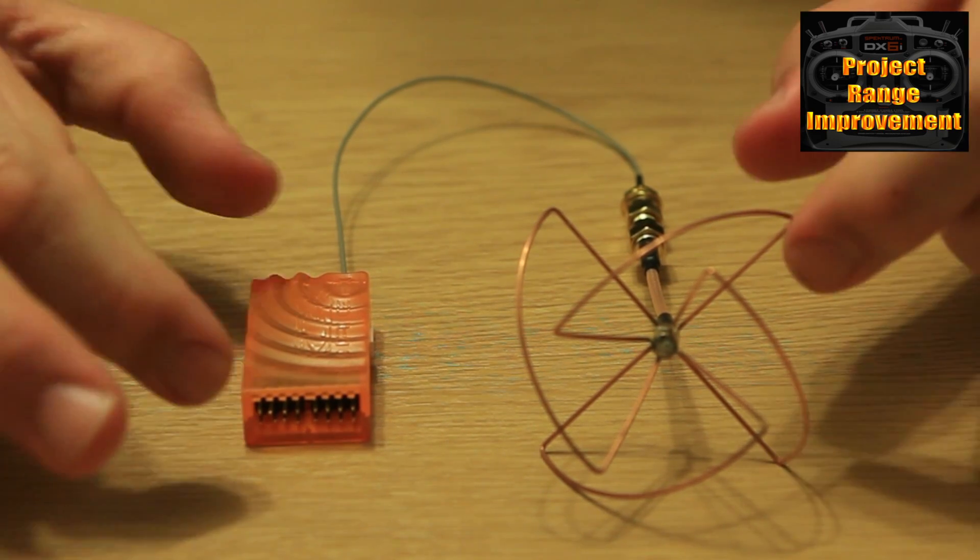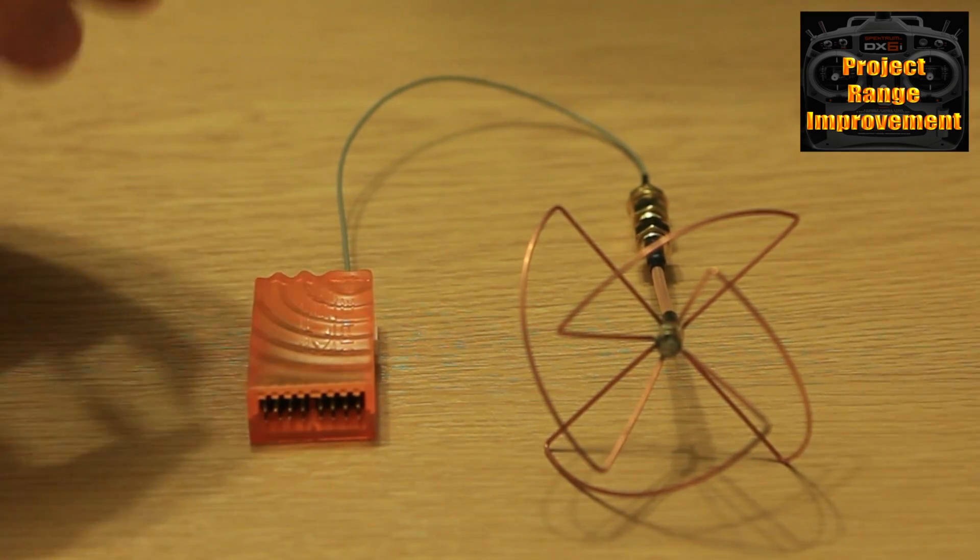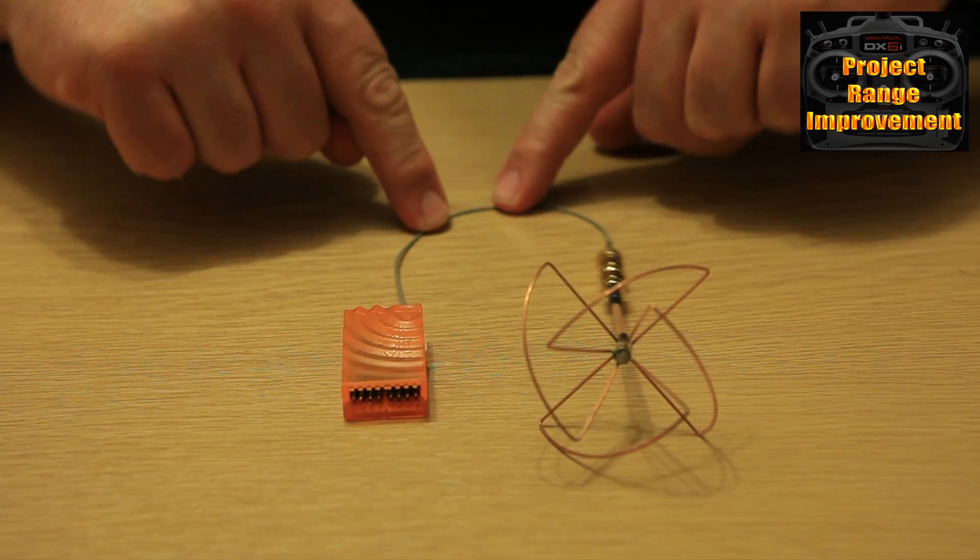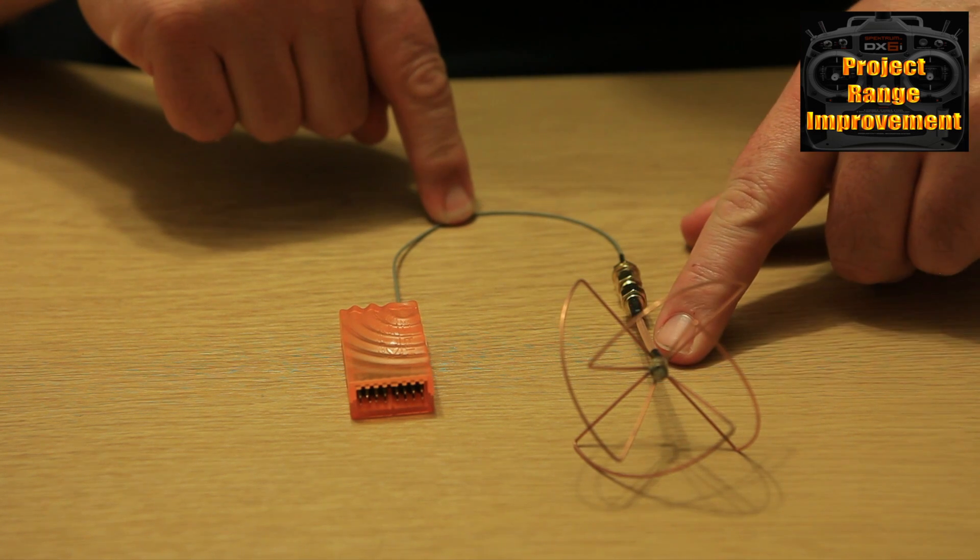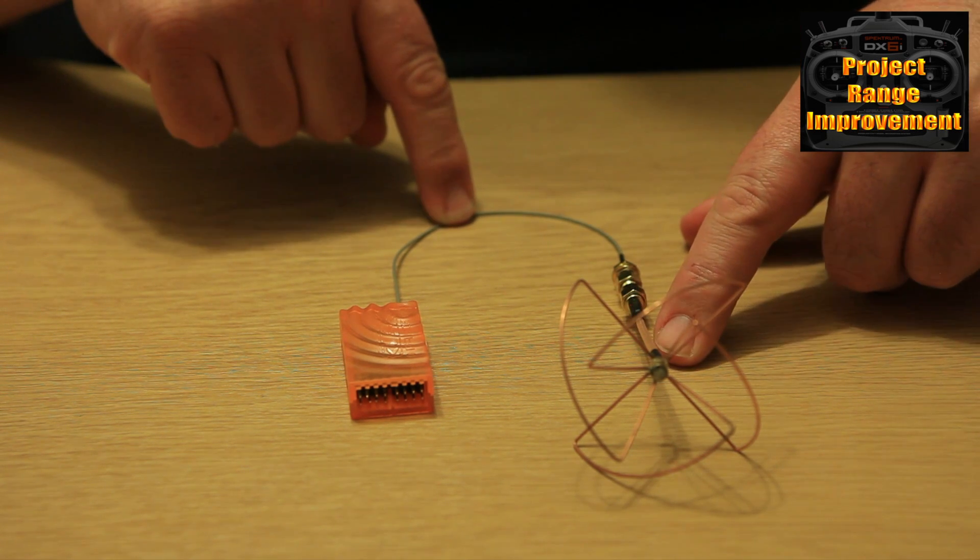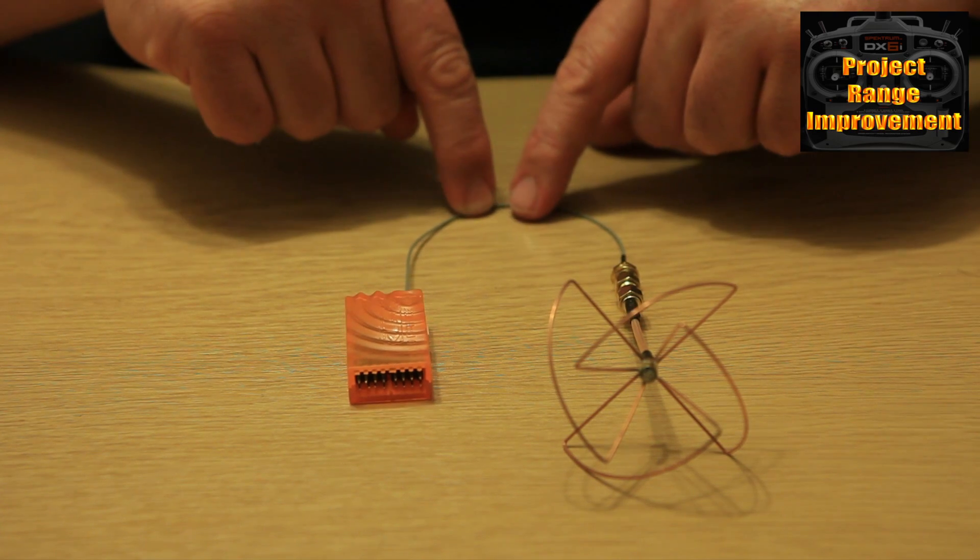That really is how simple it is to do this upgrade. It really couldn't be simpler. Buy yourself a UFL to SMA lead and an RP SMA 2.4 gigahertz antenna.